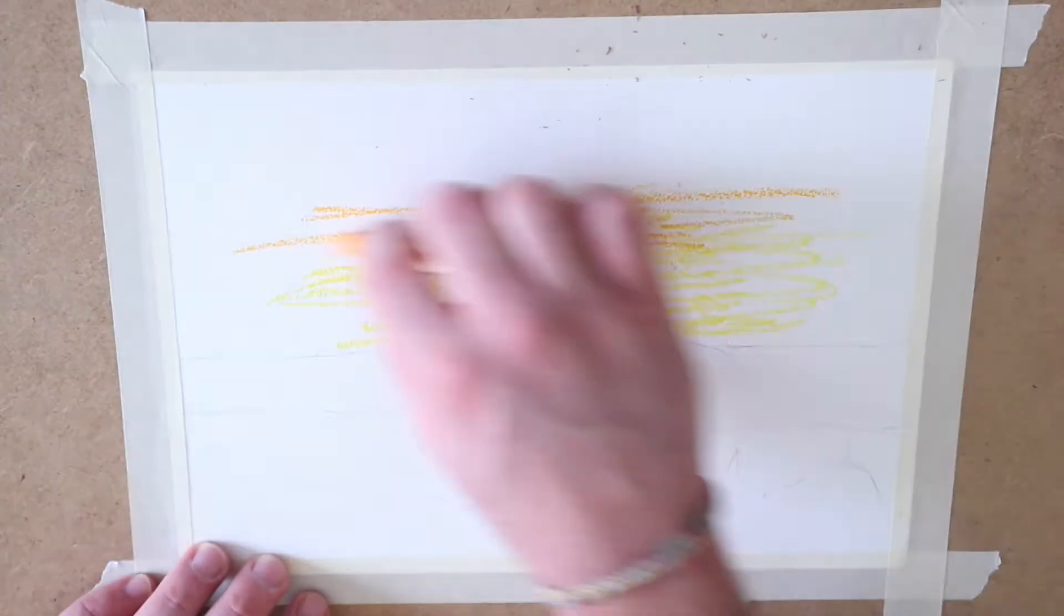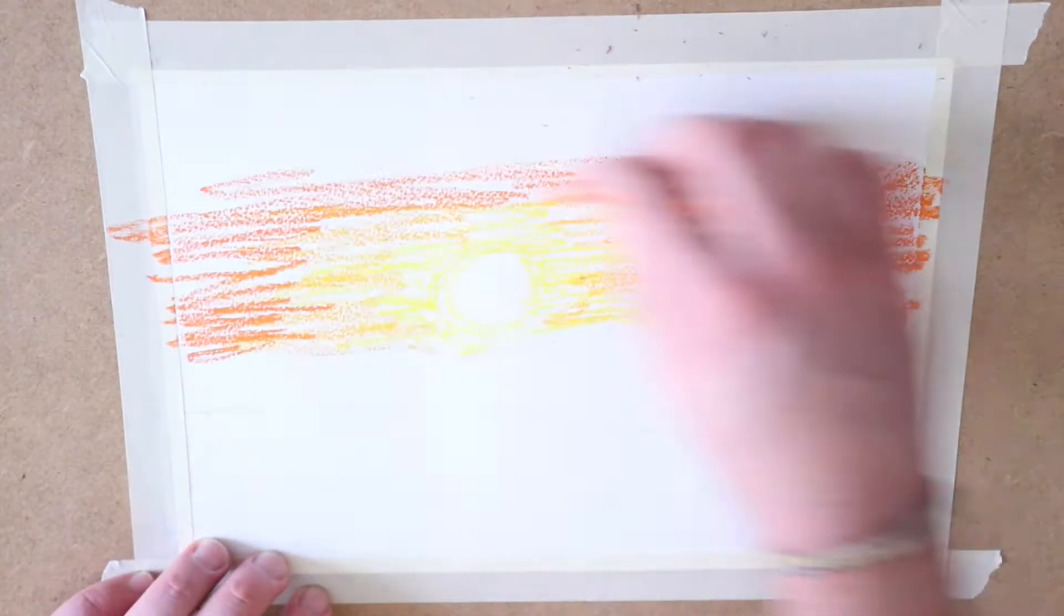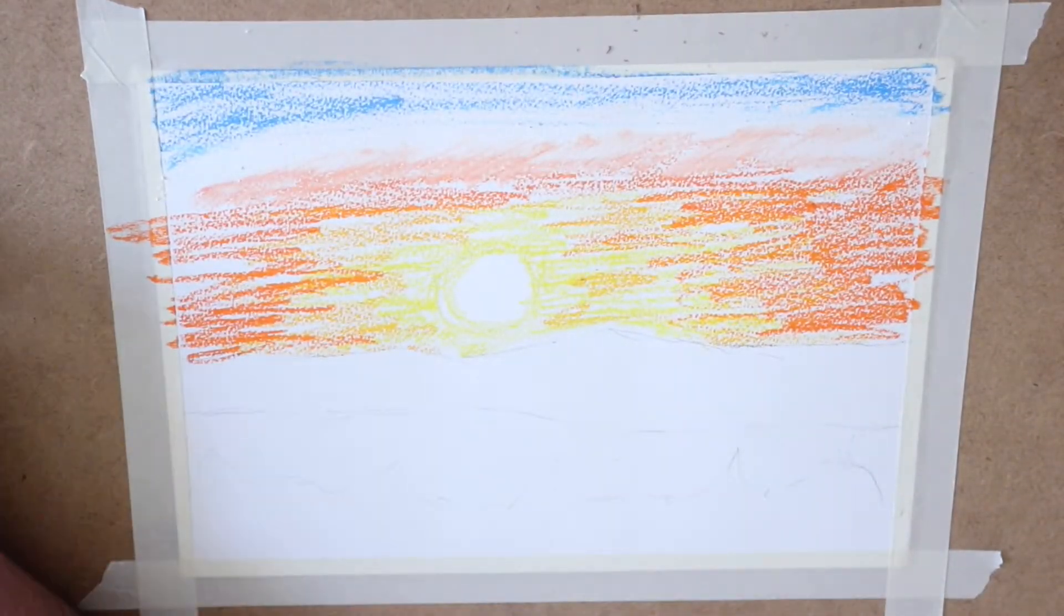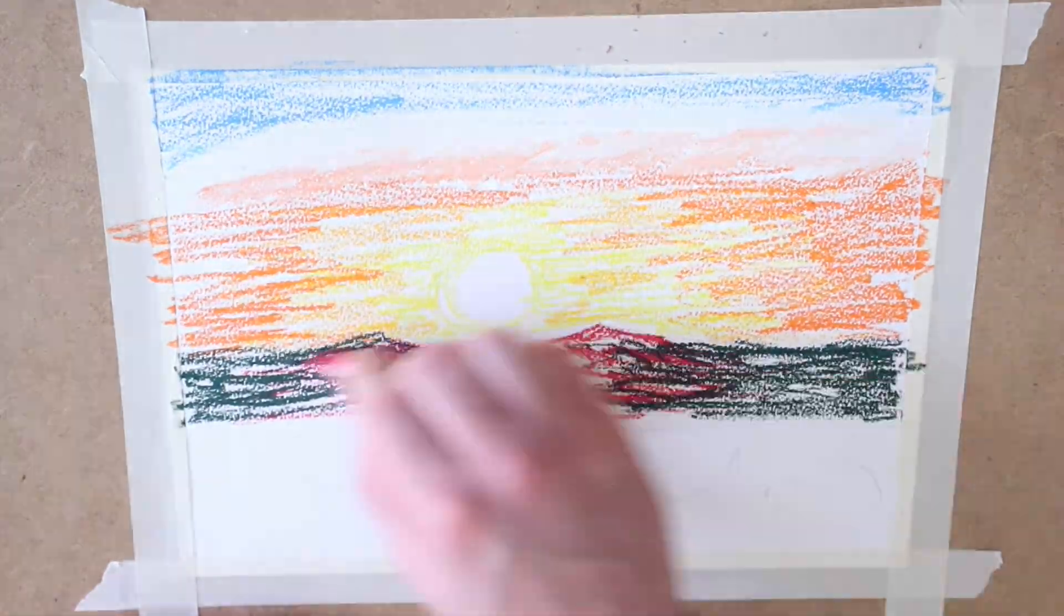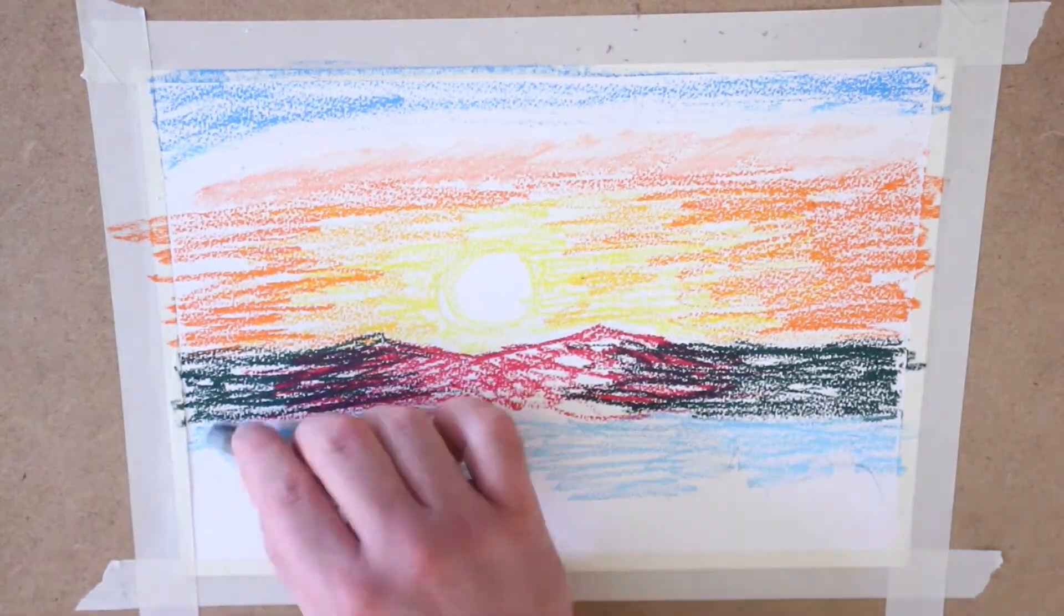Once you get your lines sketched in, you're going to grab your oil pastels and then you're going to block in, but you're going to block in with color. So you're going to get a rough base of just the colors and then later on you're going to go back in and add the finer details.